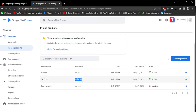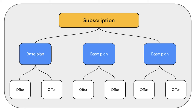Before moving on to the subscription product, let's understand it with a simple diagram. For a subscription product, we have a subscription, then multiple base plans under it, and multiple offers inside the base plans. The subscription represents the overall time period — like one year, one month, one week. The base plan represents the type of subscription — auto-renewable or prepaid. The offer means promotional deals, like buy 12 months and get one month free. For now, let's focus on creating a simple subscription product.